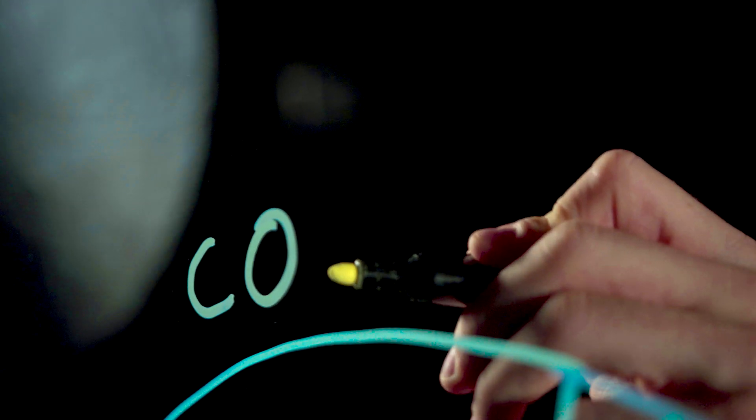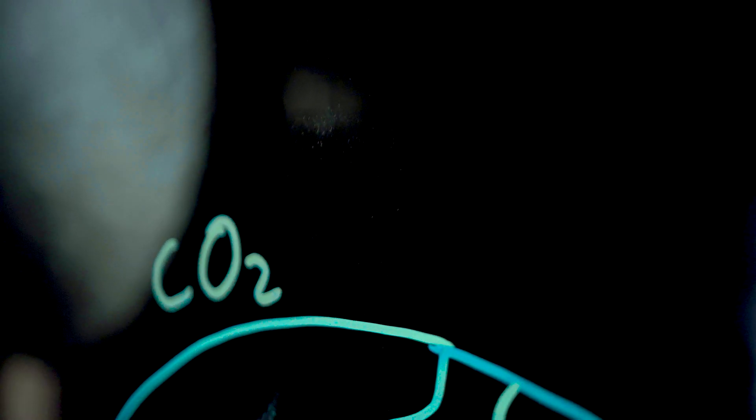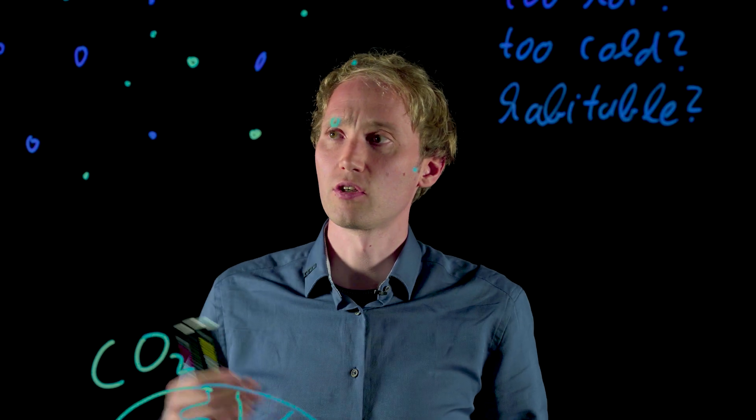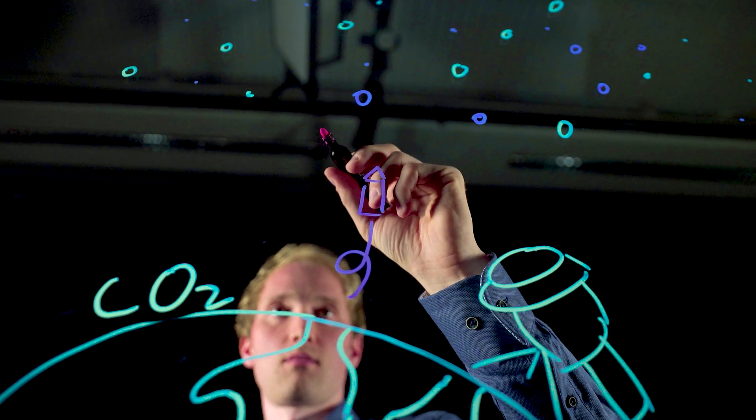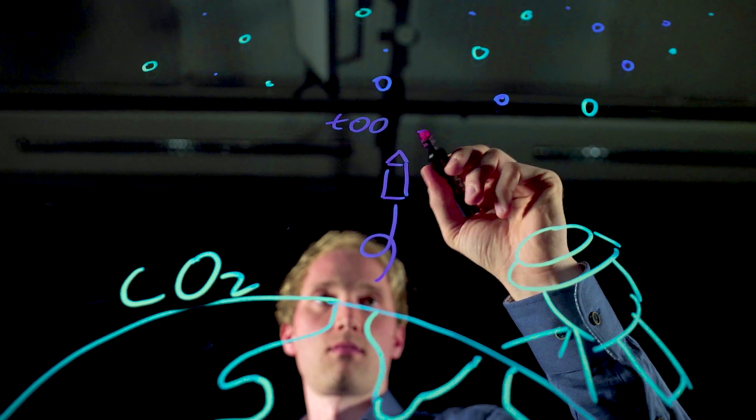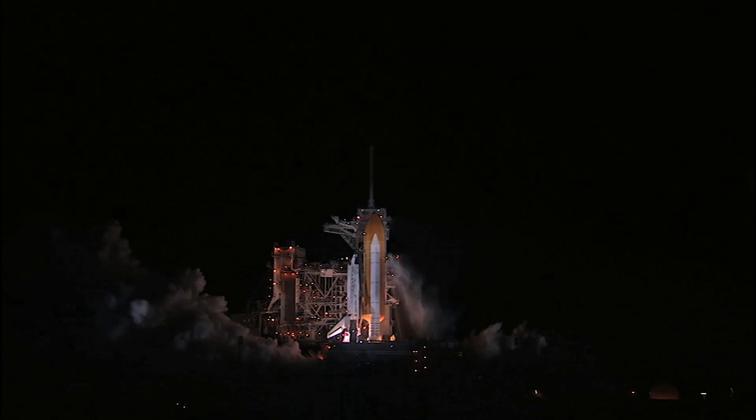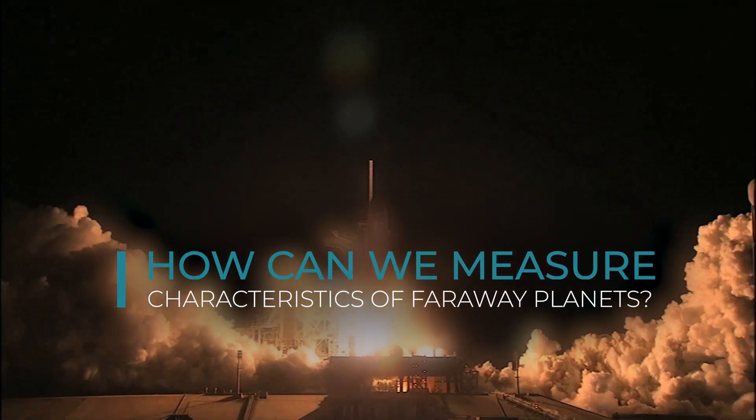For these extrasolar planets, the problem is that we can't actually go there and measure the surface temperature or the availability of liquid water. They are just too far away. So how can we still know if these planets are habitable or not?